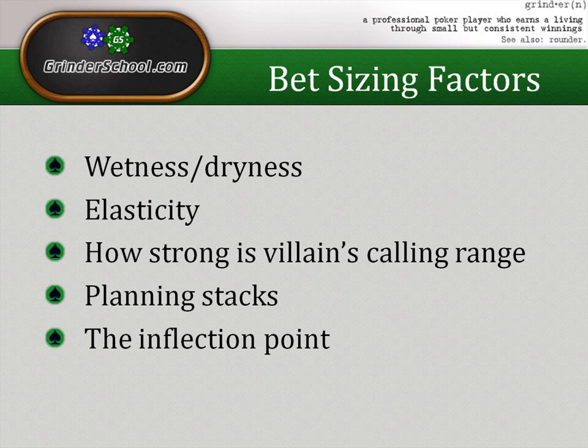So how strong is villain's calling range? This is pretty important both when you're going for value and when you're going for a bluff. For value, if we know our opponent has an uncapped range — lots of sets and two-pair combos, and the way he's played the hand we think his range is strong and we have the nuts — then it would make sense to bet a lot more because we're getting called by a strong range. If villain's calling range is really weak, like the only worse hands we're getting called by are weak hands, say we're thin value-betting second pair on the river, it makes much more sense to make it smaller. We want him to call with those hands because it's a thin value bet, so we make it smaller — perhaps a third pot on the river.